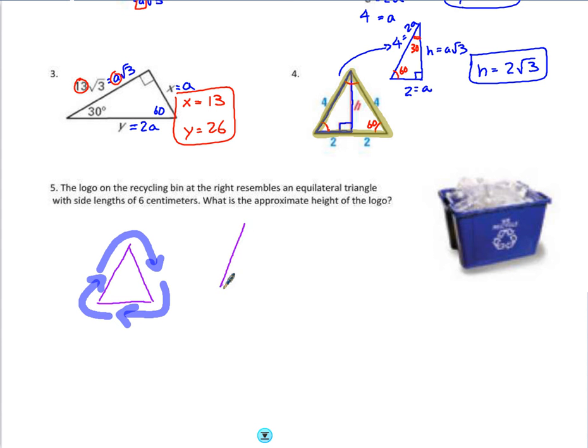If that is an equilateral triangle and you take your ruler and you realize that each of those sides are 6 centimeters, then you could find the height of that logo by drawing a perpendicular line to the base going up to the vertex angle.